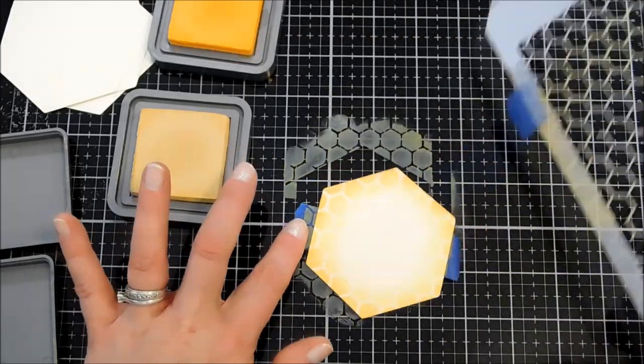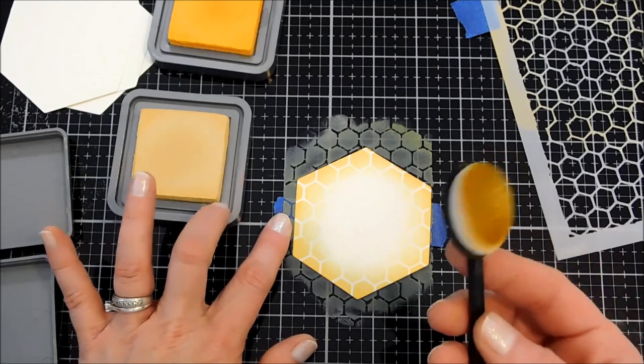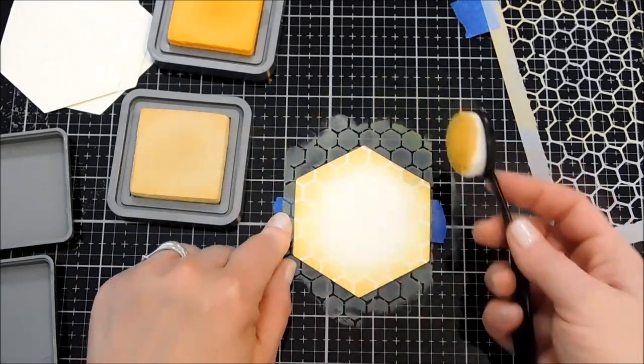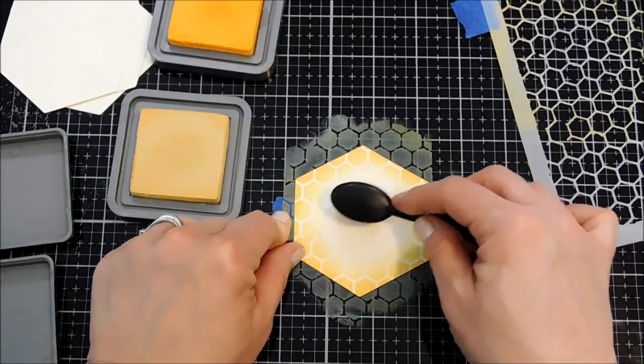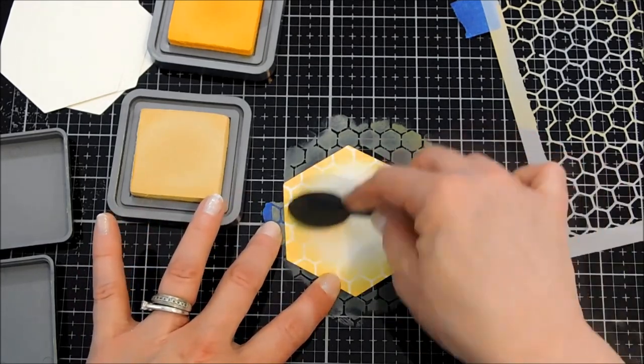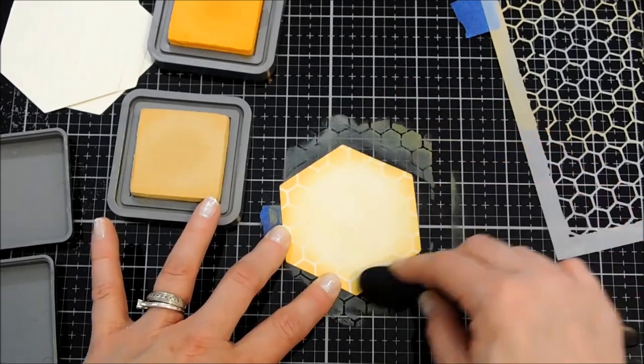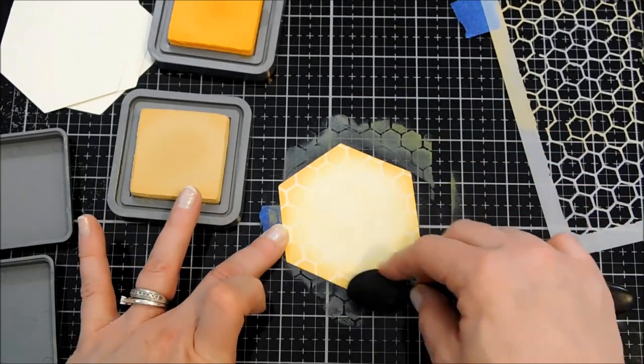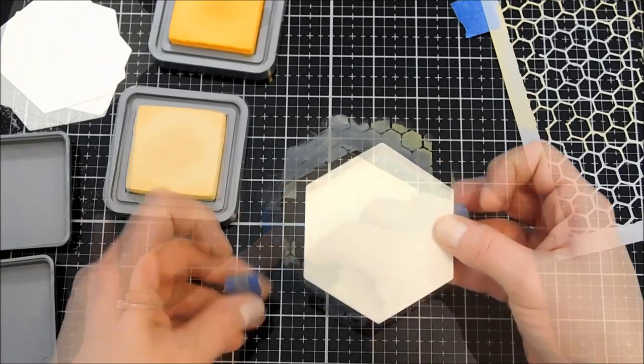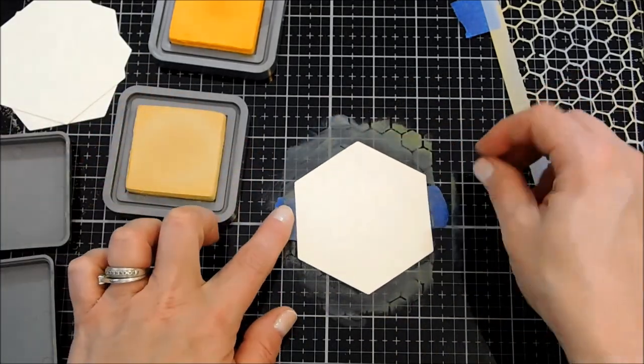I'm going to come back over that with the Scattered Straw again. Once I've done that, I'm going to come back in with my Scattered Straw and I'm not going to re-ink it, just what's left on here, and put a little bit of that into the center. Maybe even come over those stark white lines. I'm going to do the same thing on all four of my vanilla pieces.